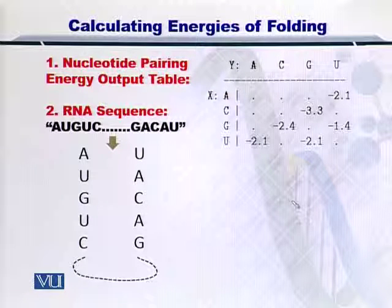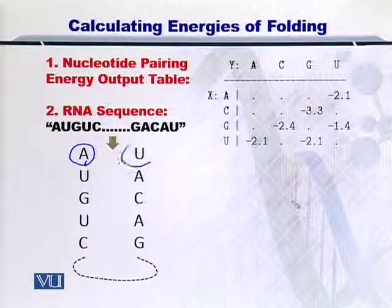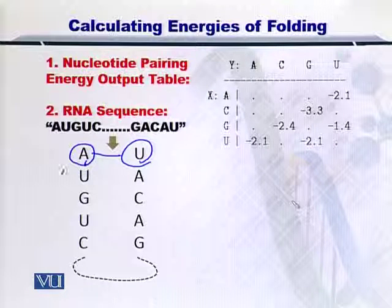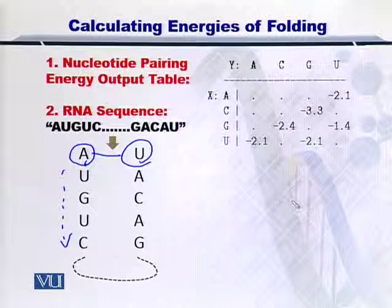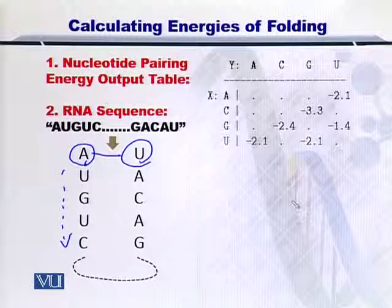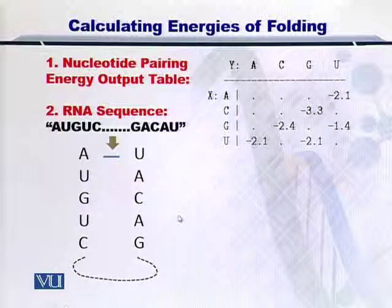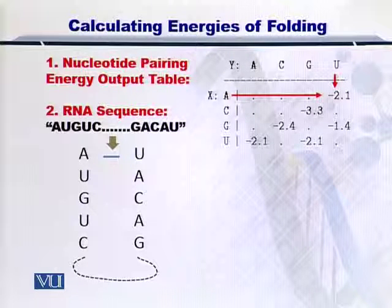We can easily form bonds between the complementary nucleotides A and U, and so on and so forth. Upon the formation of each bond, energy will be continuously given out, and we will try to accumulate all the energy given out to find the net energy released. If A and U form a bond, from the table you can see that minus 2.1 kilocalories will be given out.